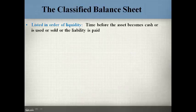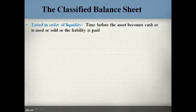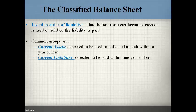The accounts on the balance sheet are listed in order of liquidity. Liquidity refers to the time the asset is expected to be converted to cash, used, or sold, or a liability is paid. Assets expected to be used or converted to cash are listed first. Liabilities that are expected to be paid the soonest are listed first. Current assets or liabilities are expected to be used, collected, or paid within one year or less.